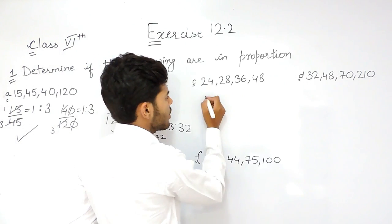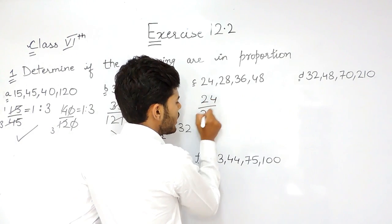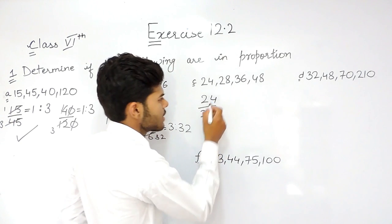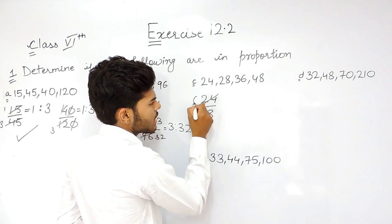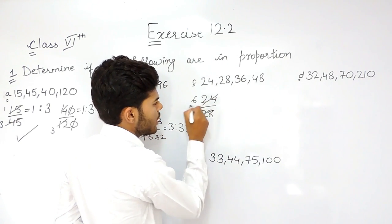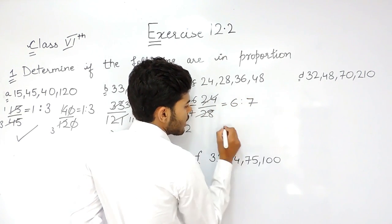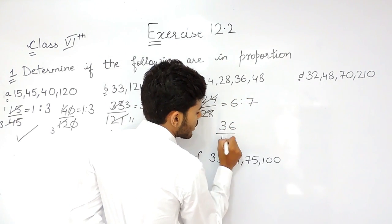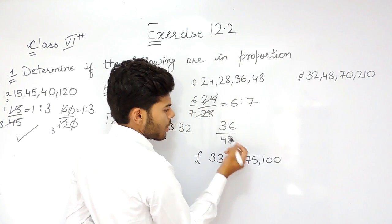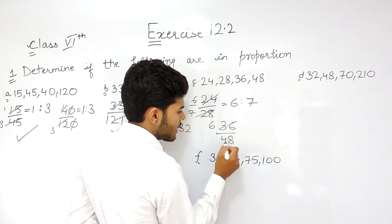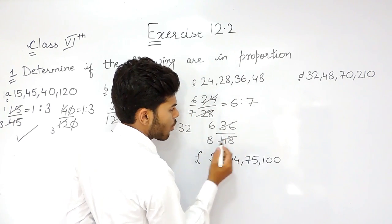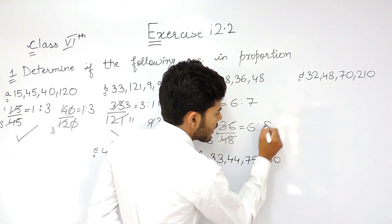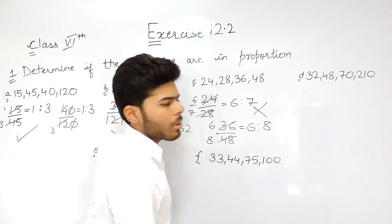Now this one, 24 upon 28. The ratio will be 4, 6 times 4, 7 times 4, so the ratio is 6 ratio 7. And 36 upon 48, that's 6 times 6, 8 times 6, so the ratio is 6 ratio 8. That means it is not in proportion.